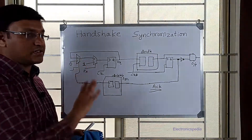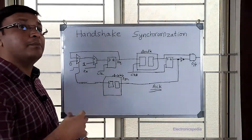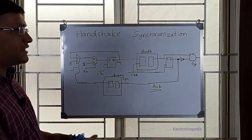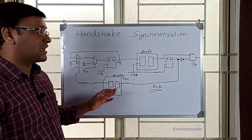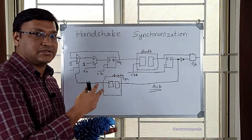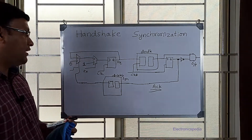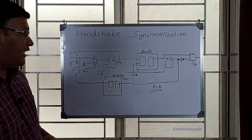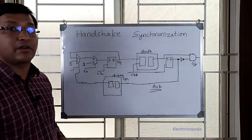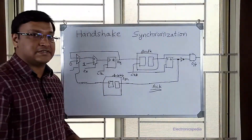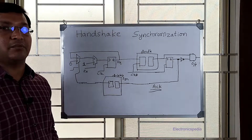This is the handshake-based synchronization technique — an industry standard. There may be modifications based on requirements or bug fixes, but this is the basic structure. It works for fast-to-slow and slow-to-fast clock domain crossing. I hope this concept is clear. In upcoming videos I'll cover timing topics like setup time, hold time, and static timing analysis. Please subscribe to the channel — thank you.